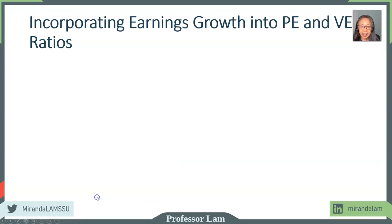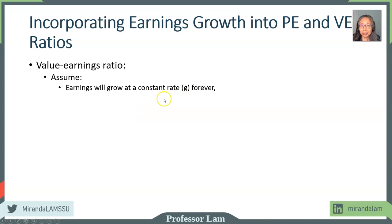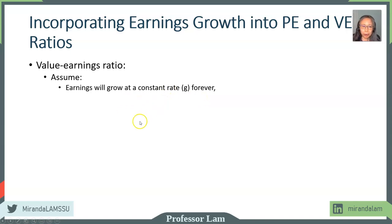This simple no-growth firm gives us an easy way to understand the relationship between value and earnings. Now let's extend our model to incorporate growth. For the value earnings ratio, let's assume that earnings can grow at a constant rate forever. If the growth rate is different for a few years and then becomes constant, we just have the forecast horizon part and the continuing value part, but the essence remains the same — so we assume a growing perpetuity.